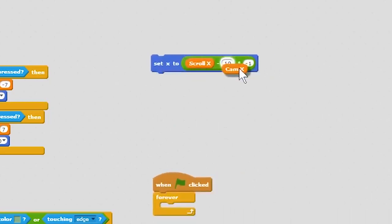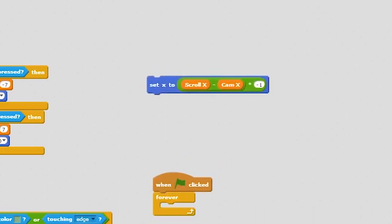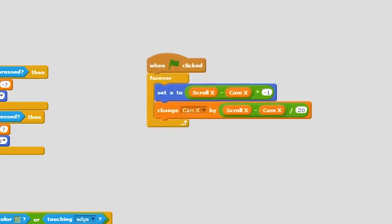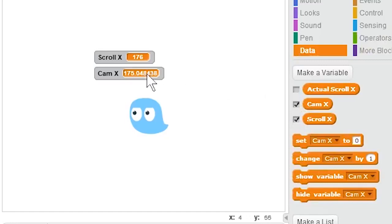Then what I have is I just have set x to scroll x minus cam x times negative one, and then I change cam x by scroll x minus cam x divided by 20. What this is doing is if we put it in here and we show cam x and cam y, what you can see is cam x slowly drifts towards scroll x.